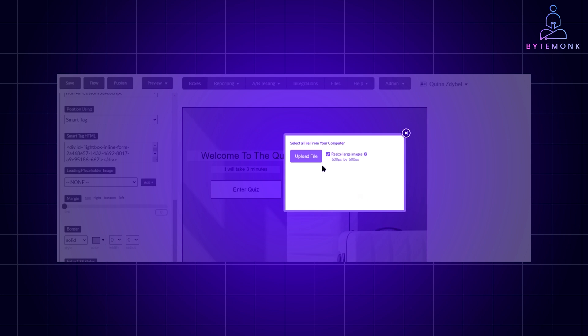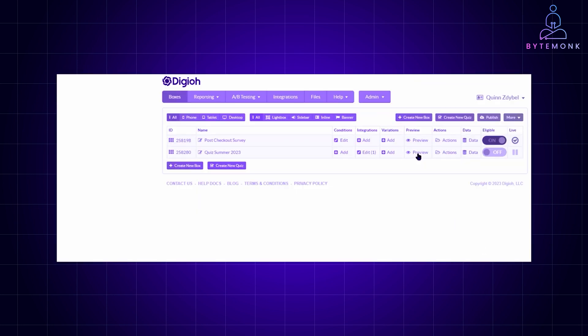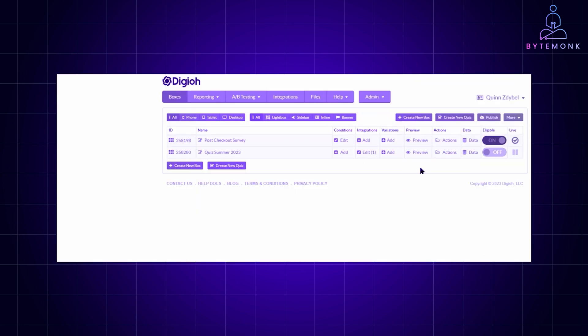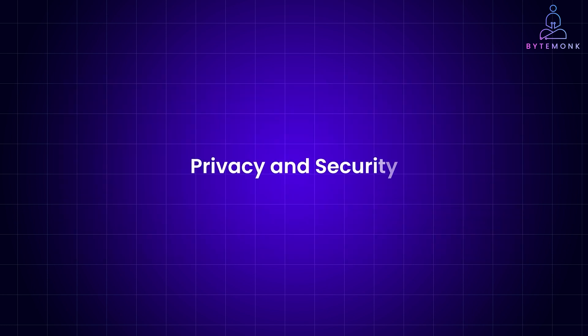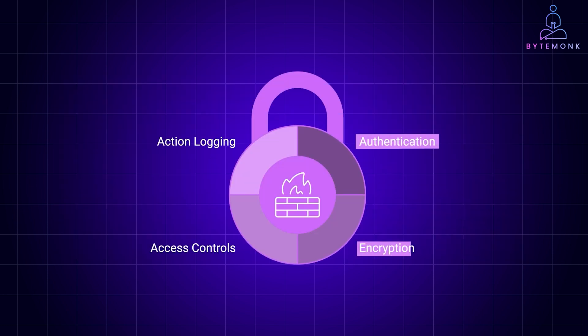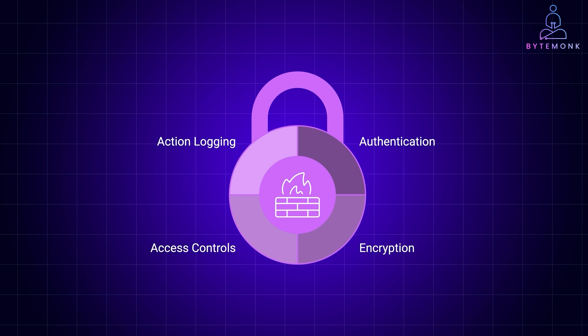With great power comes great responsibility. Since LAMs interact with real systems and often sensitive data, privacy and security are critical. LAMs need strong authentication, encryption, and secure access controls to prevent misuse. Every action performed by a LAM should be logged for accountability, much like how we audit human actions in a corporate environment. You want to be able to trust that your LAM is only accessing data with the proper clearances.